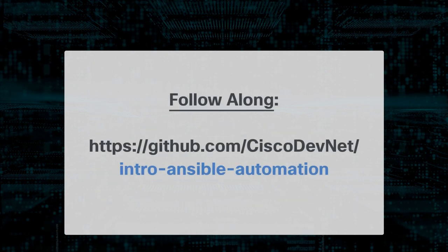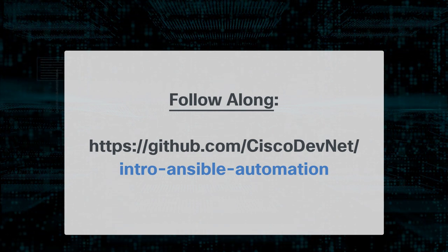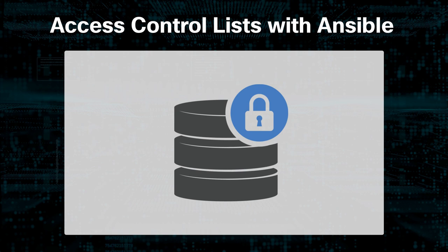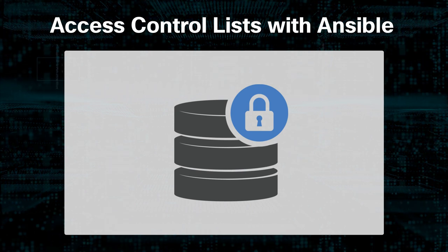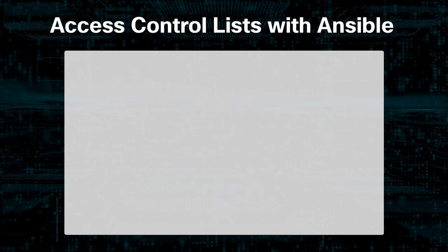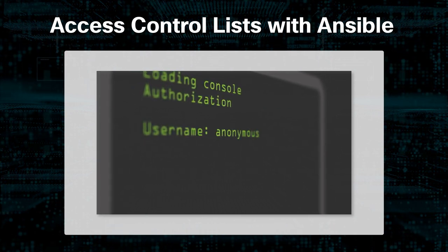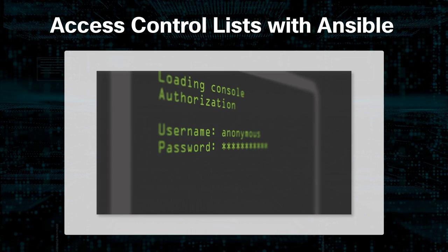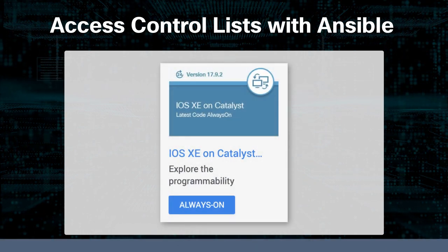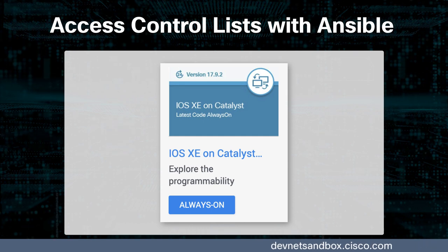If you want to follow along with the demos, you can find all the code you need in the repo. Starting each project or task with a security-first mindset will save you and your team from a lot of headaches. Access control lists, or ACLs, have historically been your first line of defense in blocking unwanted traffic into and out of a network or device. Instead of repeatedly typing CLI commands to create or update an ACL, we can write those commands once and use Ansible to make that an easily repeatable process. We'll be configuring an ACL on the Catalyst router in the IOS XE latest code always-on sandbox at devnetsandbox.cisco.com.